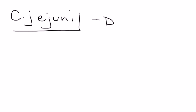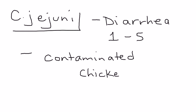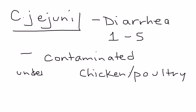C. jejuni — what does it cause? Well, most of you probably know that it causes diarrhea, and it can occur at pretty much any age, but the peak incidence is between ages 1 and 5. The source of infection is contaminated food. The type of food most commonly mentioned on licensing exams is chicken or poultry — specifically undercooked. It has also been associated with water in outbreaks.